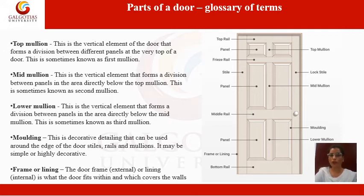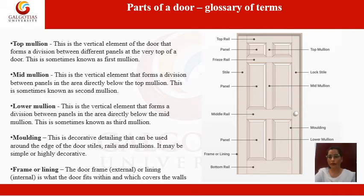The mid mullion is sometimes known as the second mullion. The lower mullion is located at the lower part of the door. Molding is the decorative detailing that can be used around the edge of the door stile, rail, and mullion — it may be simple or highly decorated. Molding is used for decorative purposes and can be applied to the exterior or interior of the door.